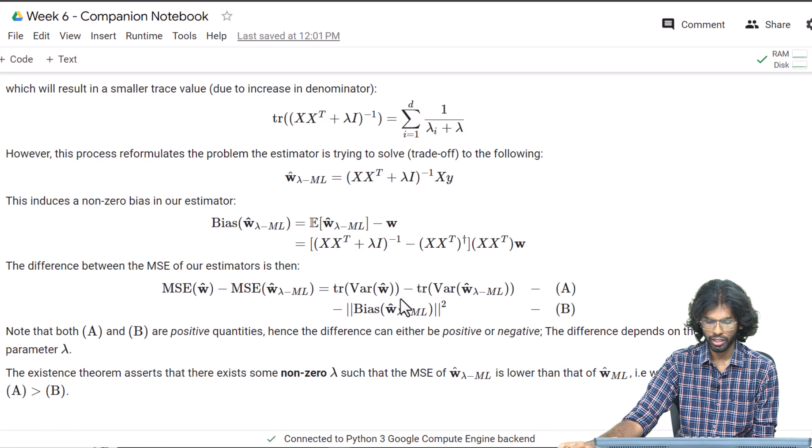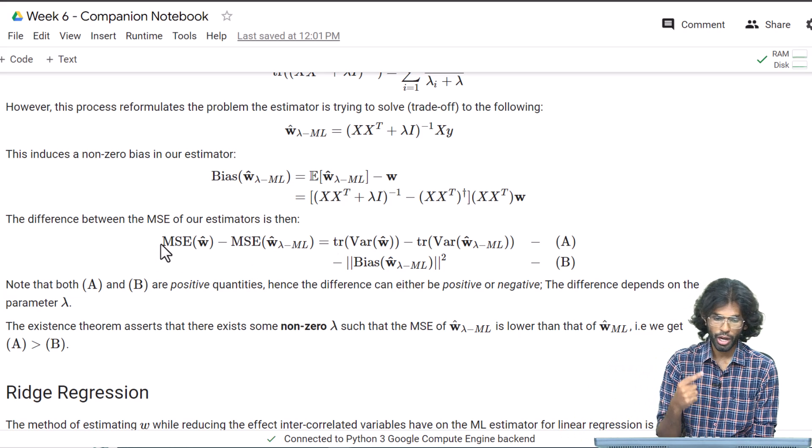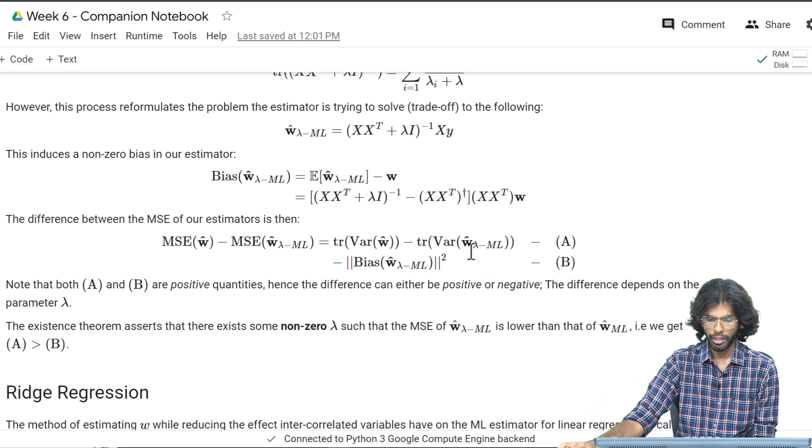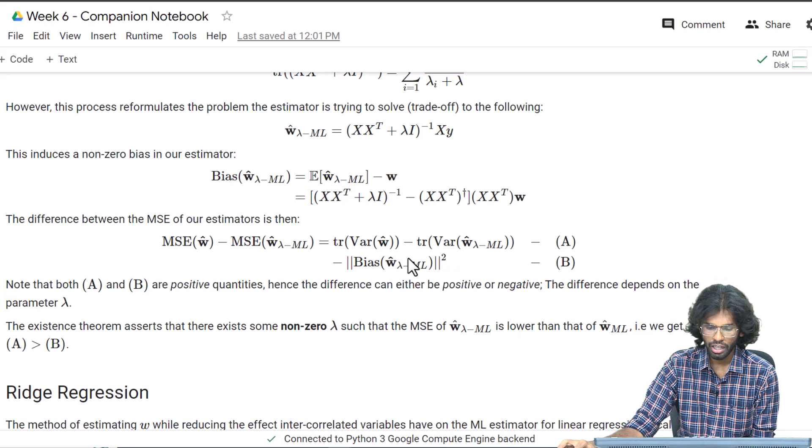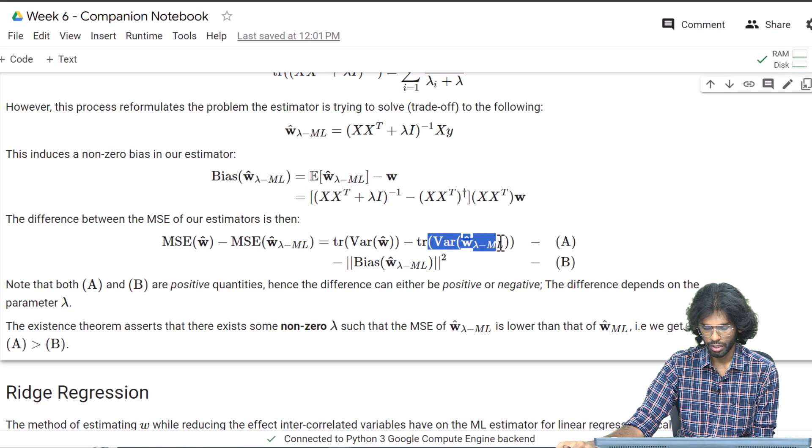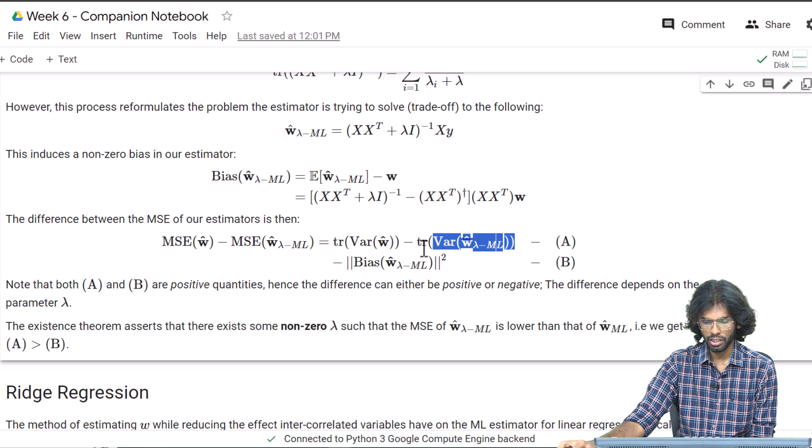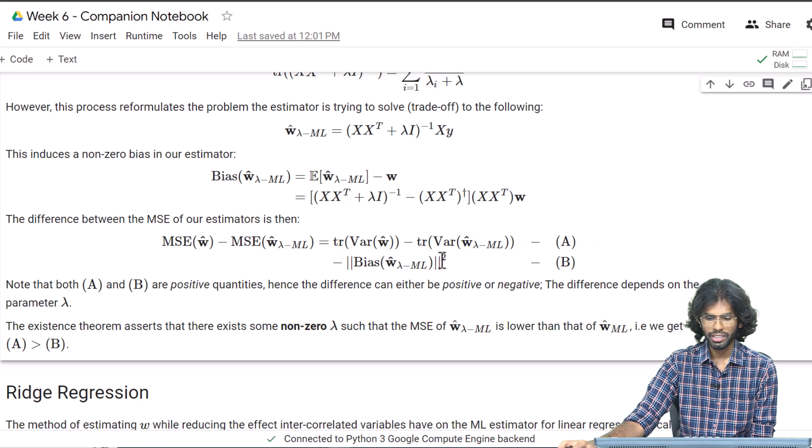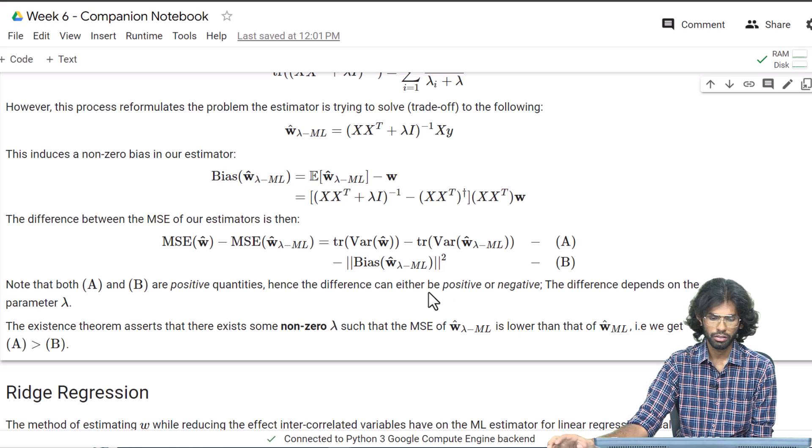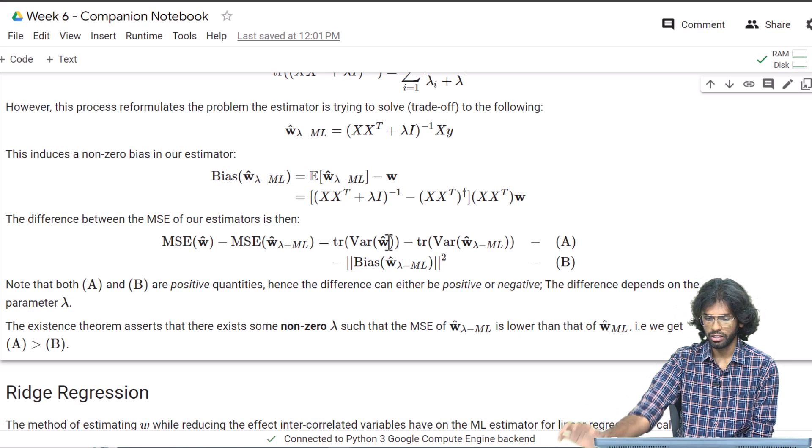The first one has zero bias, so there is only the trace of the first estimator w-hat ML. The second one is the ridge estimator. If we consider the difference, we get this expression. You can see the first two terms: this term is strictly greater than this term because this is what you changed—the trace you wanted to reduce. Hence, this term, which I call A, is positive. The second term, which is the square of the bias, is also strictly positive. This is a difference of two positive values, so it can either be positive or negative. There is this tradeoff between the two.